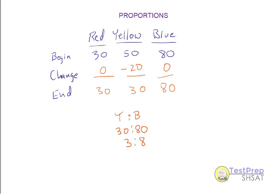Alternatively, they could give a final proportion and ask how many yellow remain. If yellow to blue at the end is 1 to 2, then yellow minus some number n to 80 blue gives the equation 1 divided by 2 equals 50 minus n over 80. Solving for n gives n equals 10. So either way, I can be flexible about what's being asked and how to solve for it.